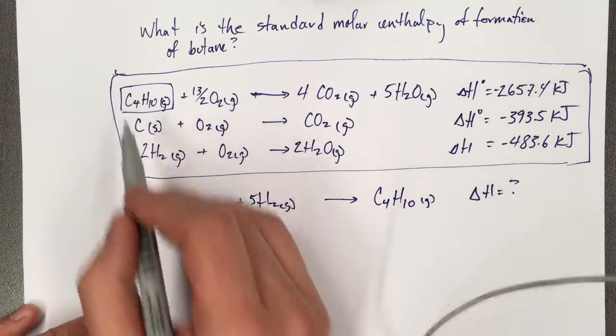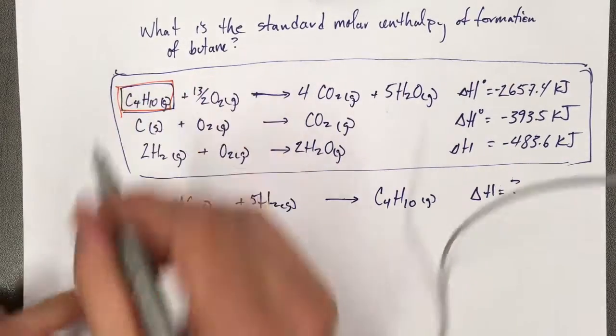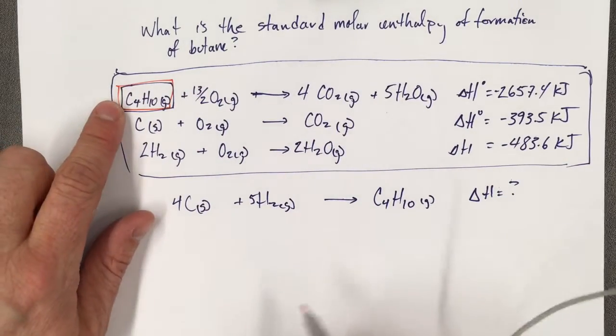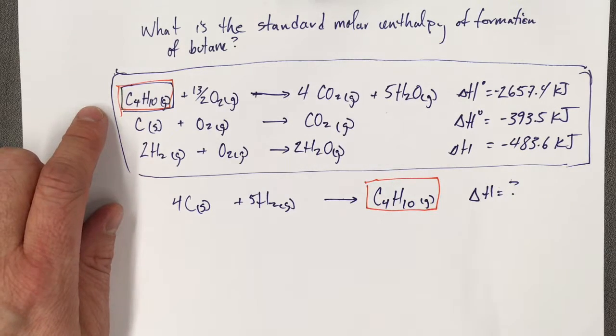So what I do is I go to my first reaction, and I say, well, this looks like a suspicious chemical here, right? So if this butane is in the reactants, and it's got a coefficient of 1, I want 1 butane in the products.